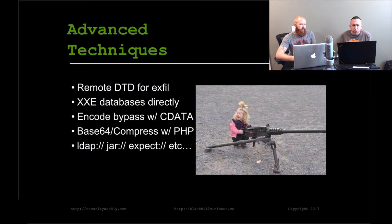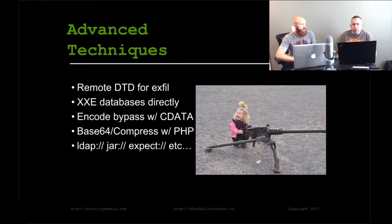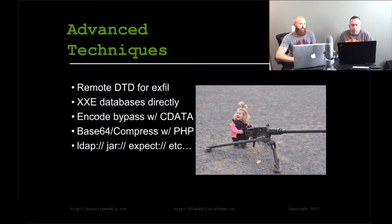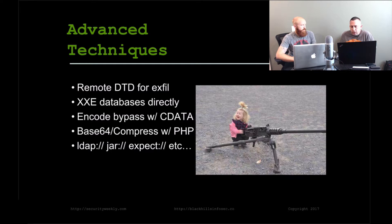Looking at some advanced techniques: you could host a remote DTD — the document type definition file for XML, which outlines where your external entities are. If you put a DTD file on a remote server you control, you could exfil data by adding two external entities in your XML — one that reads the local file in and one that calls that remote DTD — and it passes the local contents to your remote server. Another scenario: the parser itself wasn't vulnerable to XXE, but the database it was interacting with was, and by passing XML as a parameter you could exploit the XXE on the database itself.